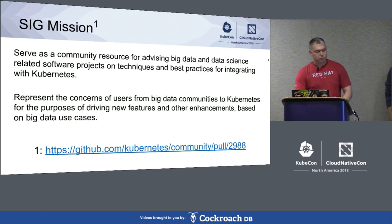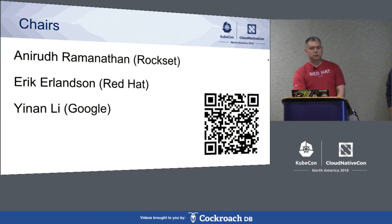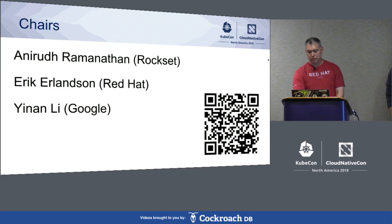The text you see is the exact text I submitted via this PR as the official SIG mission, and I'll be circling back to this PR later. There are actually three chairs of the SIG currently: Anurud Romanathan, currently at Rockset; myself at Red Hat; and Yinan Lee at Google. The QR code will take you to the Kubernetes community page for our SIG.